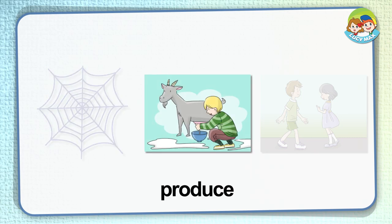Produce. If an animal produces something, the animal makes something with its body. In the picture, the goat gives milk from its body — the goat produces milk.